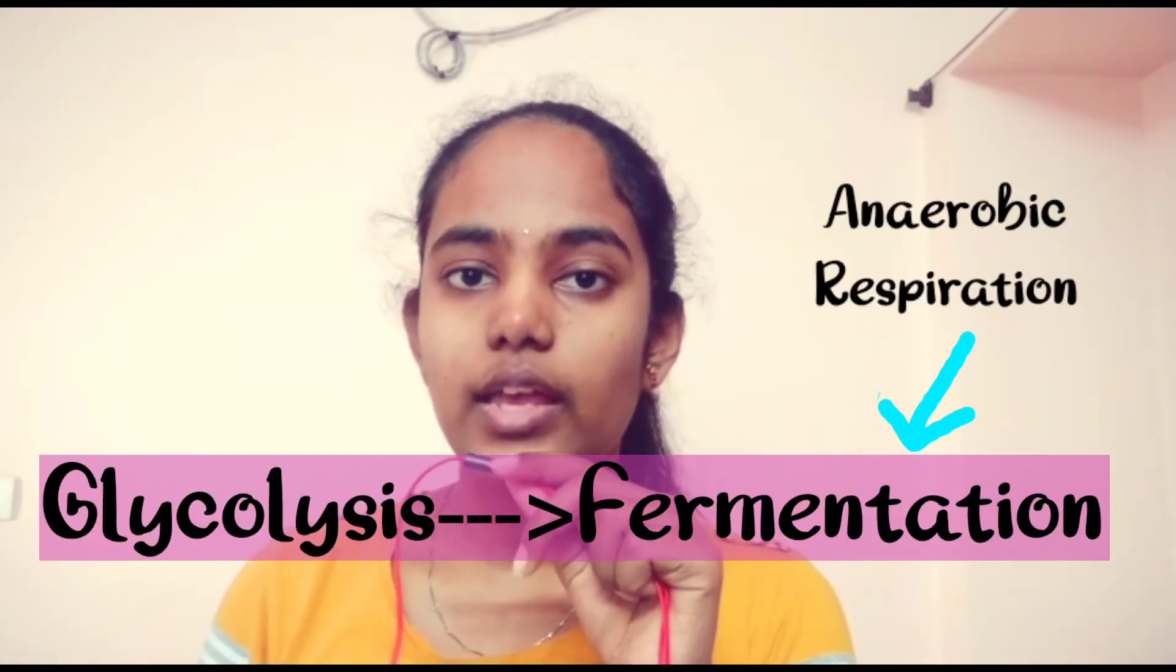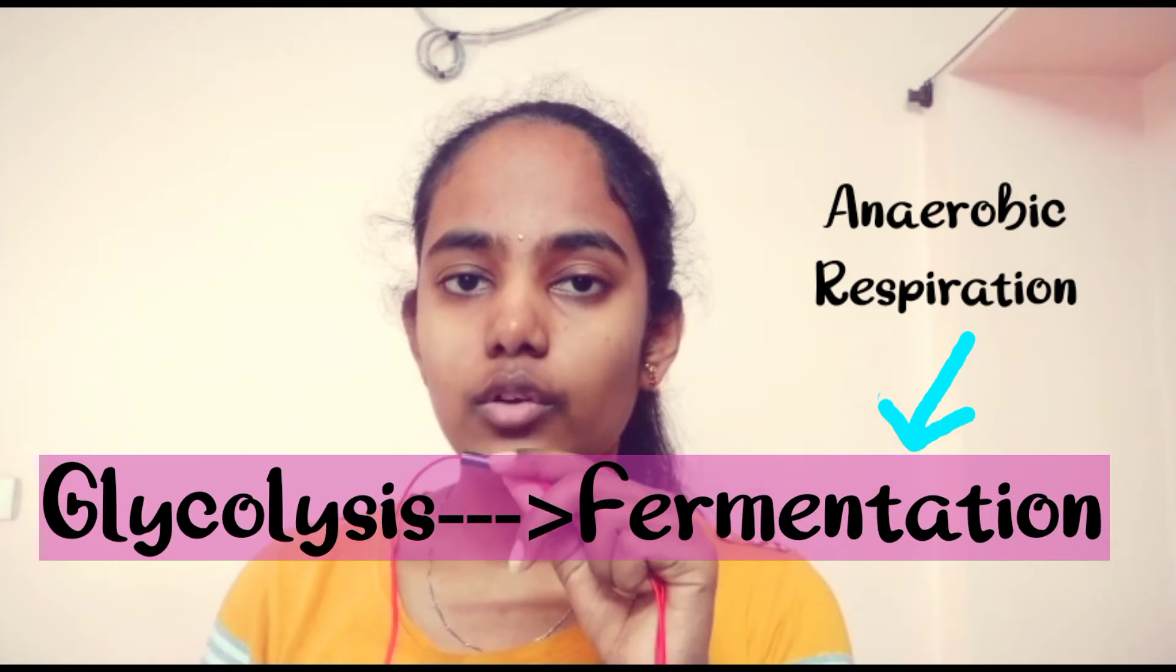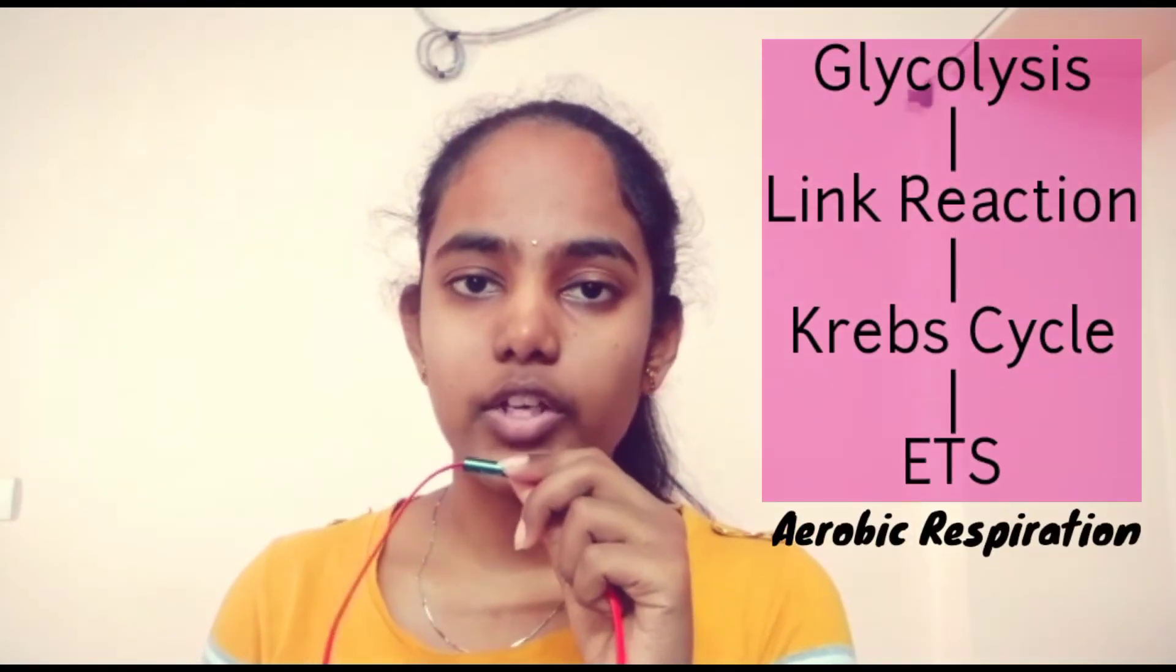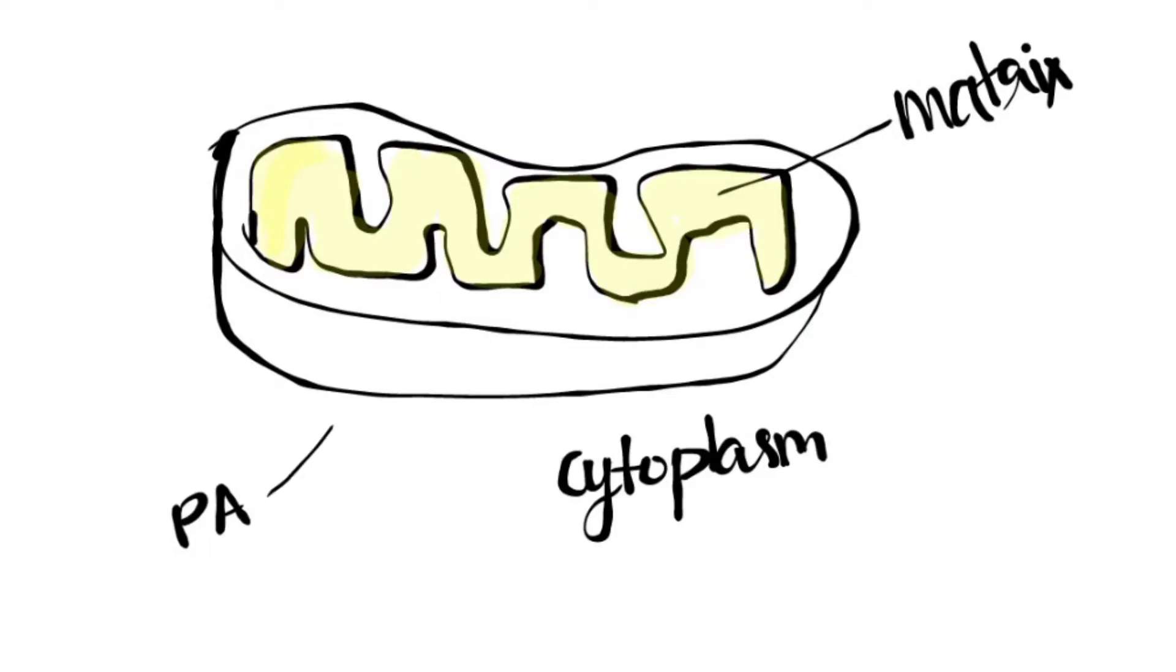Till now, we have seen glycolysis and fermentation where partial oxidation of glucose takes place and there is very little amount of energy liberated in this process. Now, we will see aerobic respiration. For aerobic respiration to take place, pyruvic acid formed in the cytoplasm during glycolysis should be transported to the mitochondria.